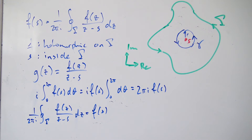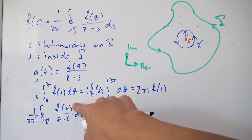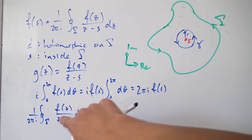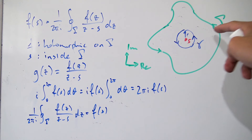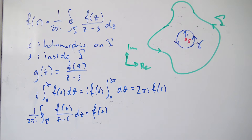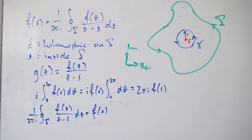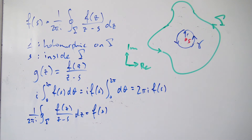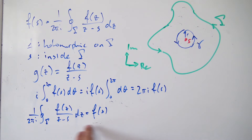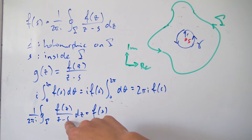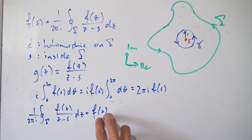That is the proof of Cauchy's integral formula. If you know how f(z) behaves on the boundary gamma where f is holomorphic, you can find the value of the function at any single point inside the contour. You can also take it the other way: if you have an integral in this form with s inside gamma, its value is simply 2π·i times f(s).